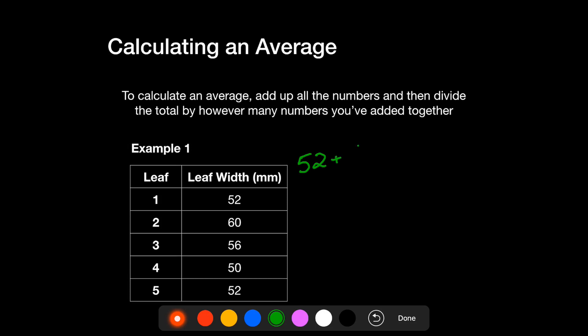So in this situation here, we have five leaves with five different widths. So if we add 52, then we add 60, 56, 50, and then 52, and then we add them all up in order to get the total, we should end up with a value of 270.